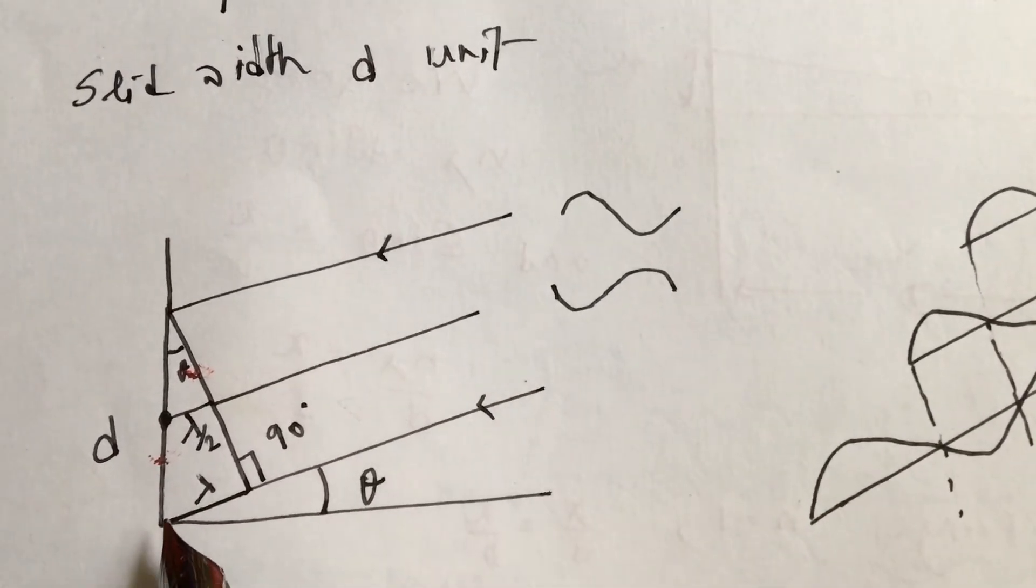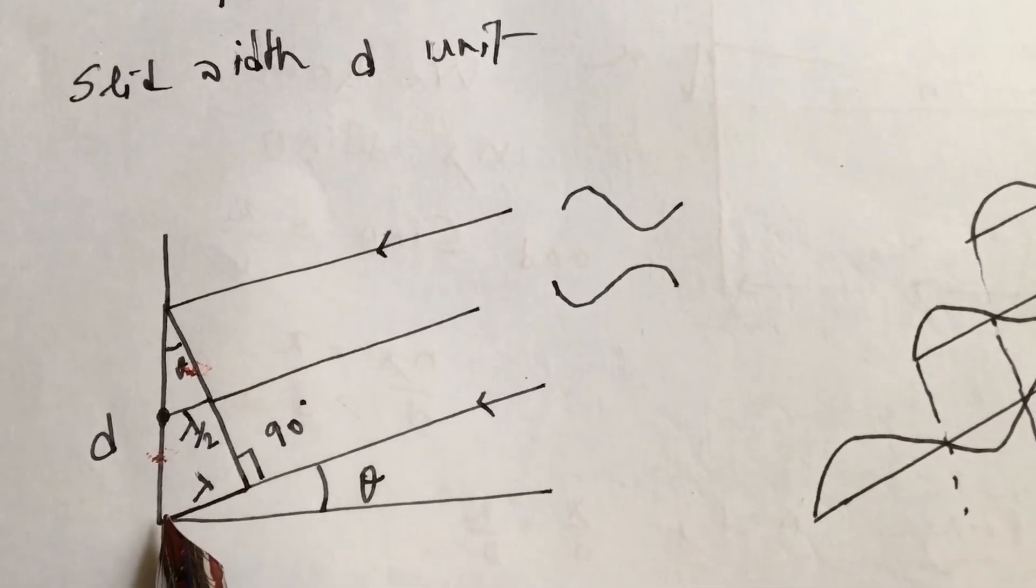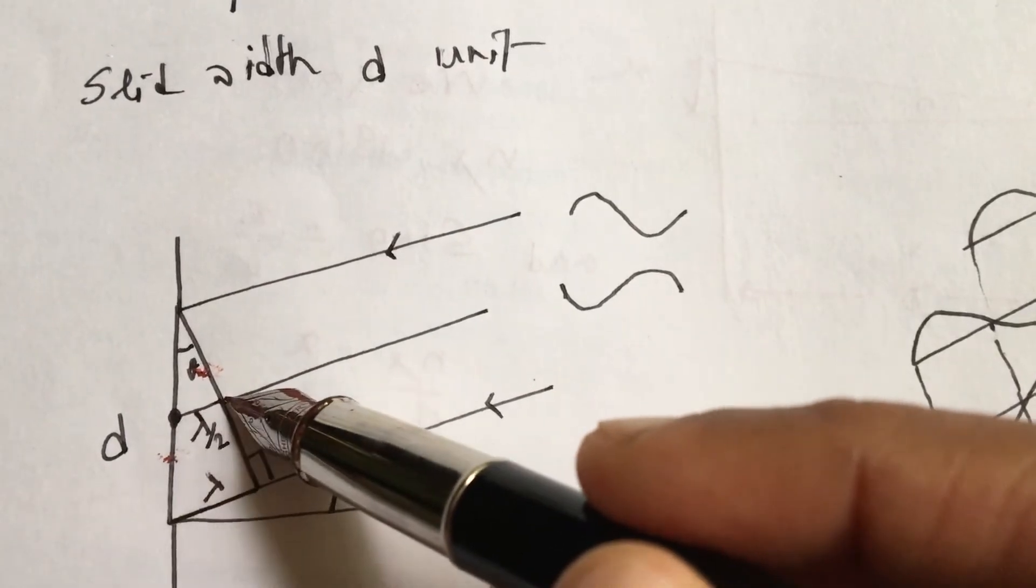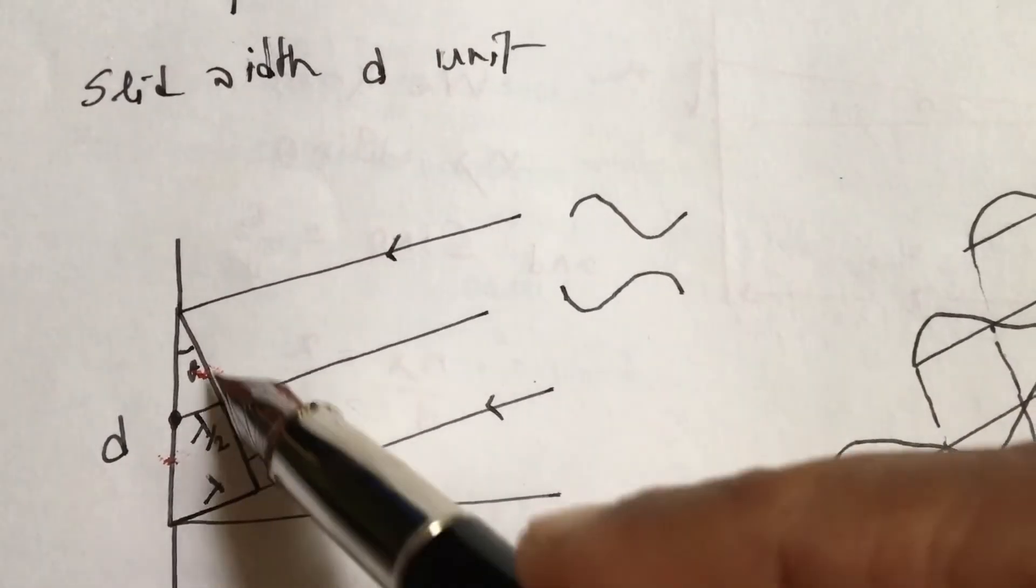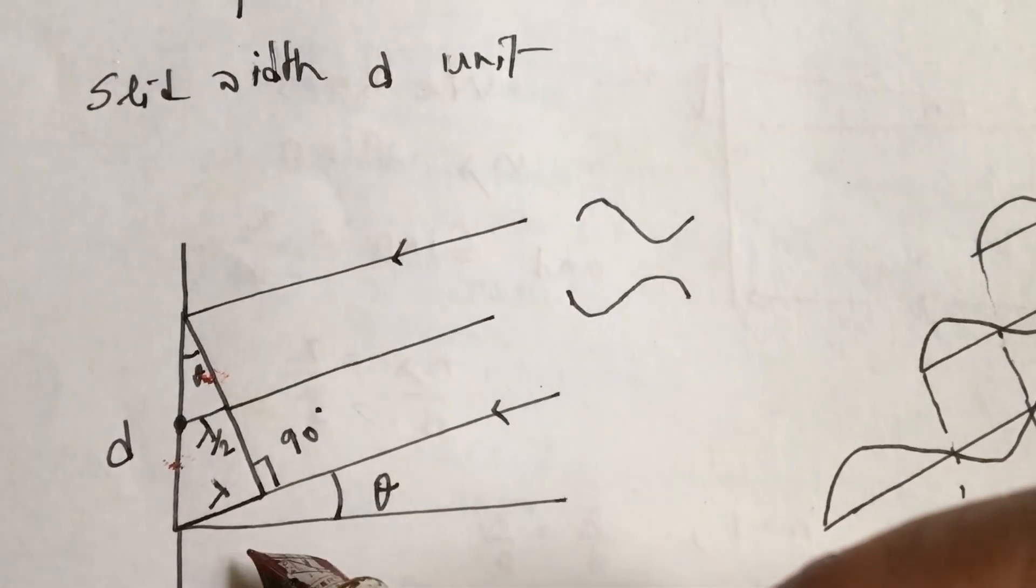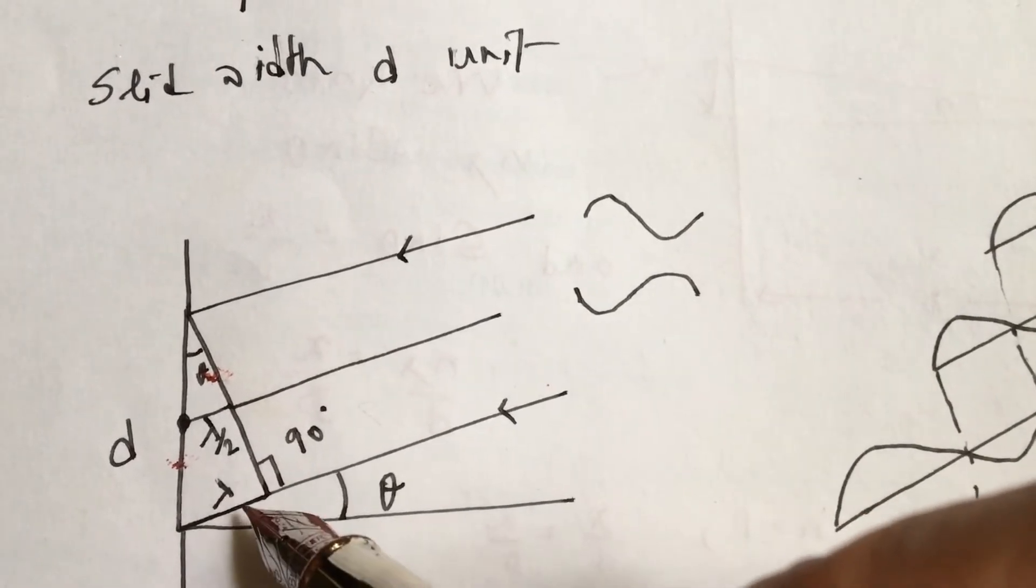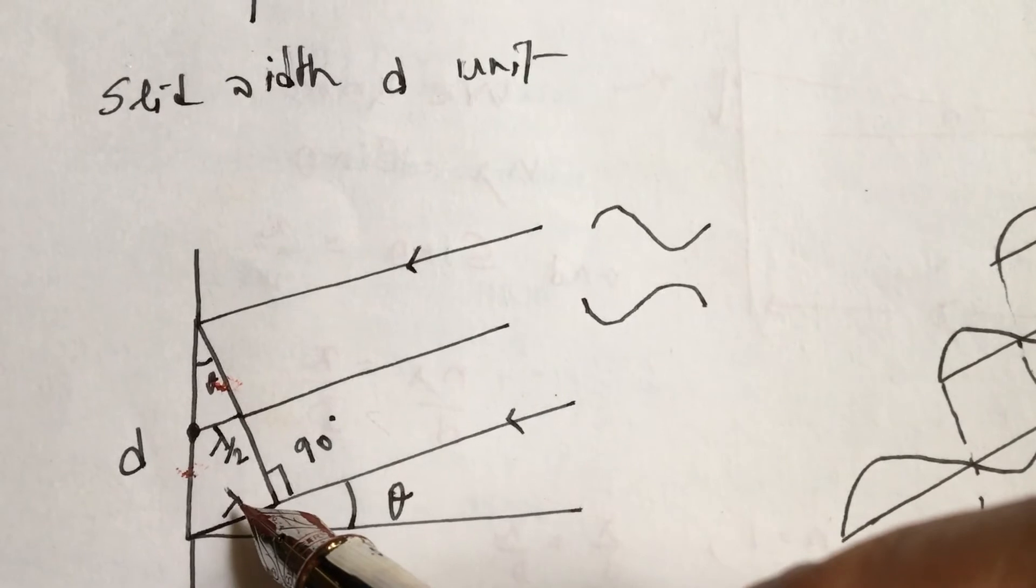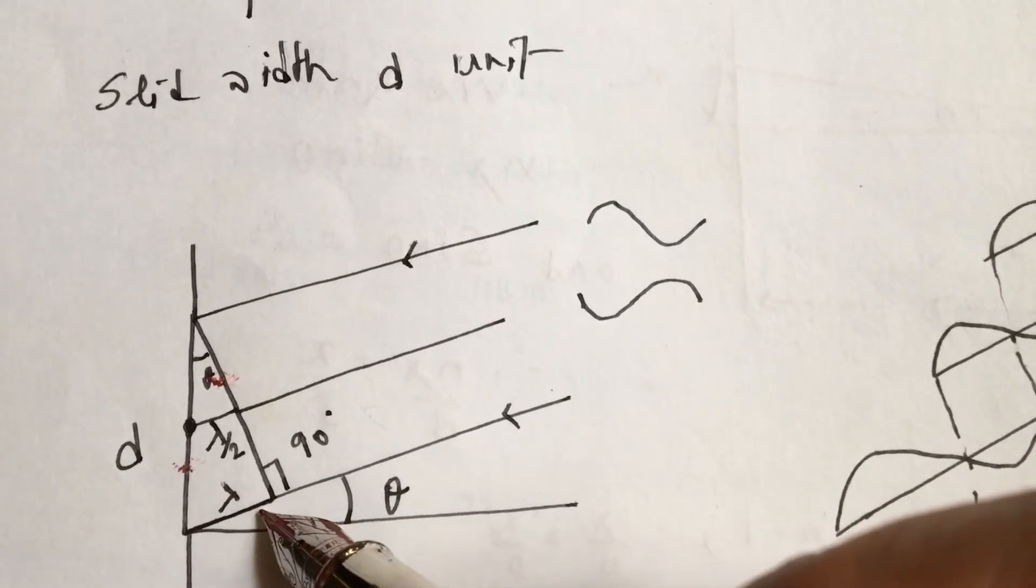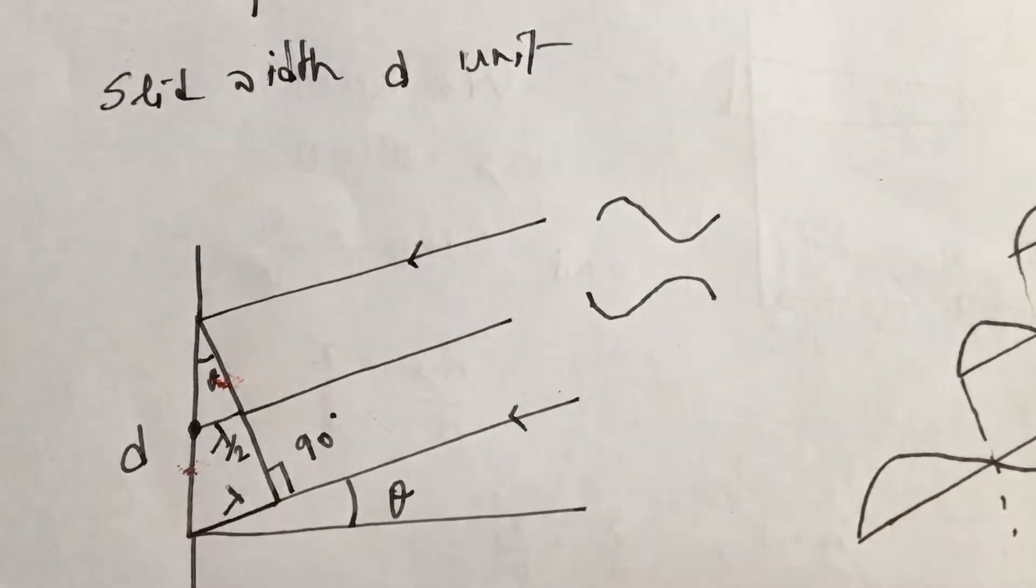Here we have magnified the slit. This distance is lambda, one wavelength. If we go to the midpoint using symmetry consideration, this perpendicular distance is lambda by 2. If this angle is theta, then this is also theta. Sine theta equals opposite over hypotenuse. The opposite side is lambda and the hypotenuse is D, so sine theta equals lambda by D. This we got from geometry.